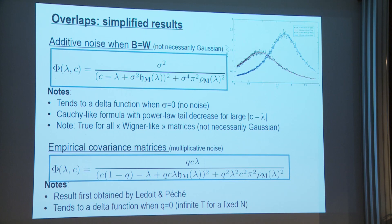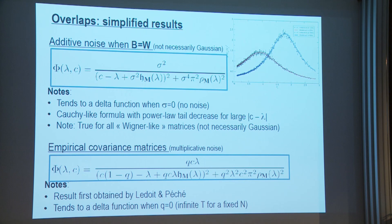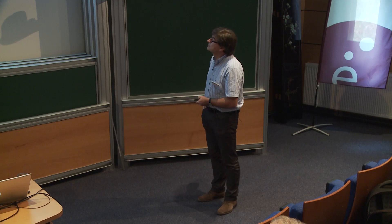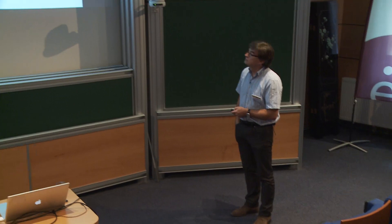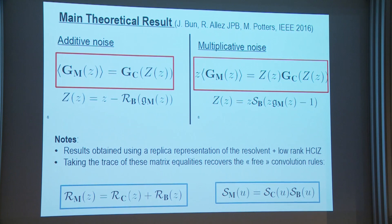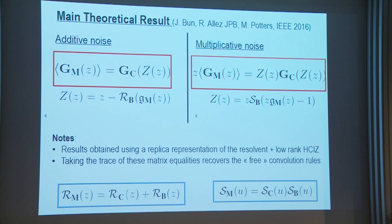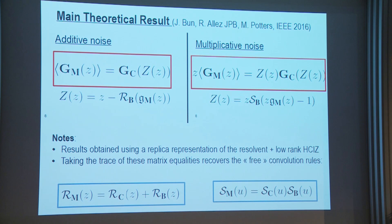There are no assumptions on the matrix C, provided its spectrum is non-degenerate. The key point is that this is a matrix identity, from which you can take traces to recover spectral results. But if you keep the full matrix structure, you get information on the eigenvectors. There's an interesting special case where C is rank one — a unique non-zero eigenvalue gamma — perturbed by Brownian matrix noise W(t). In this case, keeping terms to order 1/N gives exact results, including the BBP (Baik-Ben Arous-Péché) transition.